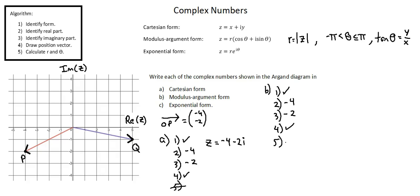Step 5, calculate r and theta. r is the modulus, which we'll calculate based on the magnitude of the position vector representing the imaginary number. The x value of negative 4 squared,